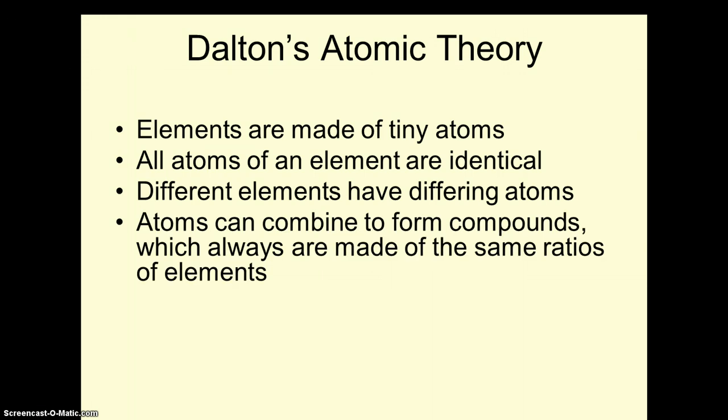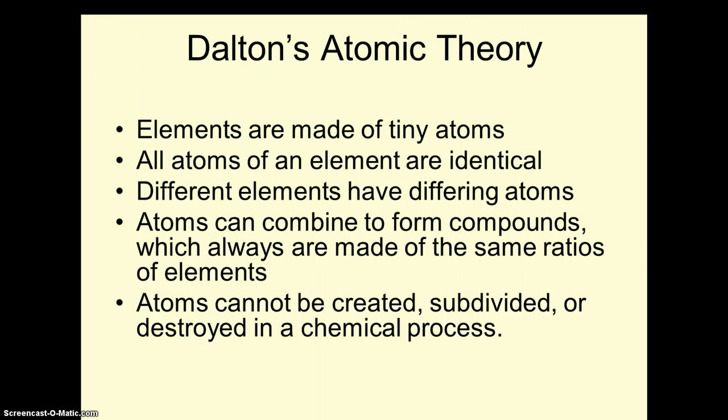He stated that atoms can combine to form compounds, which are always made of the same ratios of elements. Sodium chloride is always one sodium to one chlorine. And Dalton stated that atoms cannot be created, subdivided, or destroyed in a chemical process. He specifically didn't think that atoms had any smaller piece. One of the important things about Dalton's work is it's based on experiment, and he could not experimentally find smaller pieces than atoms.